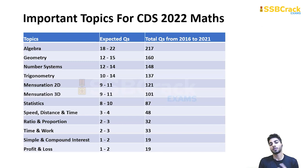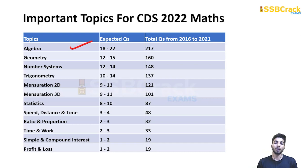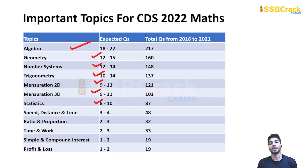Regarding expected number of questions: Algebra 18–22, Geometry 12–15, Number System 12–14, Trigonometry 10–14, Mensuration 2D 9–11, Mensuration 3D 9–11, Statistics 8–10. These are the expected ranges for all seven topics we have covered.